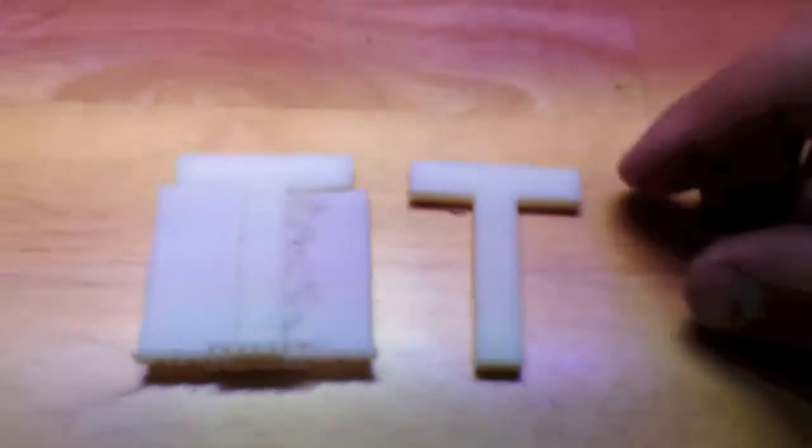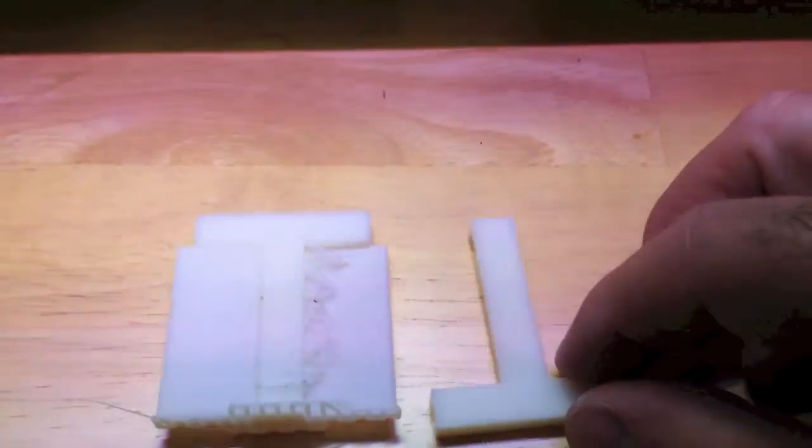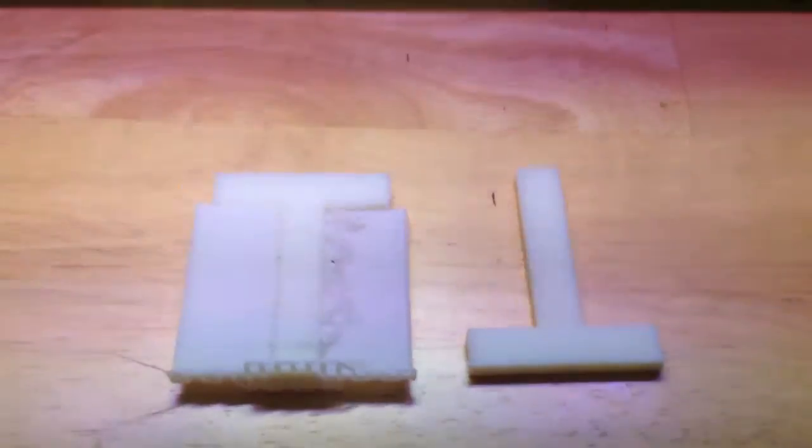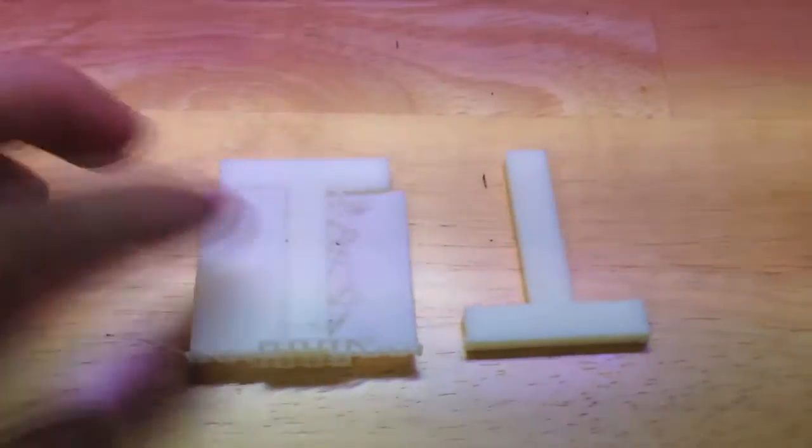So we've got our two T's. First one was printed upside down, this one here like this. And I'll show you how to remove the support.